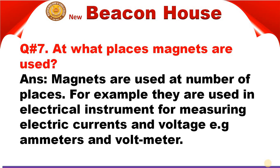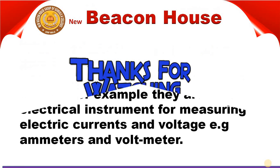We have question number seven. We discussed question number one of this slide, which was question number six of this chapter. So here is question number seven: at what places are magnets used? Magnets are used in a number of places. For example, they are used in electrical instruments for measuring electric currents and voltage — for example in ammeters and voltmeters. Okay students, the lecture ends now. Goodbye, thank you.